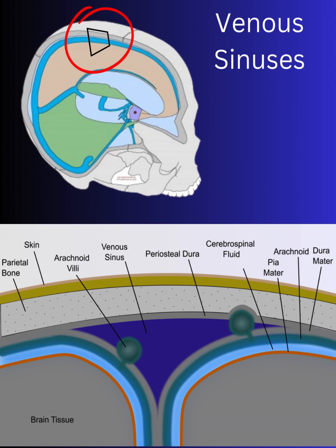The partitions are called reciprocal tension membranes as they support the architecture of the vault. This is a cross-section of where the reciprocal tension membranes meet the vault. Here, the meninges form channels called venous sinuses. They create firm, open channels for the return of blood.